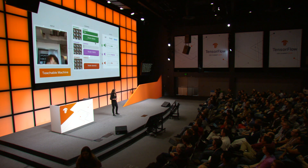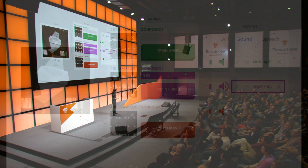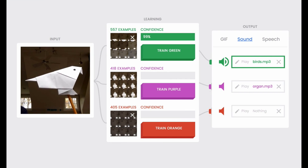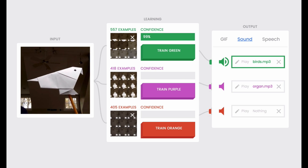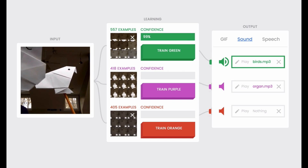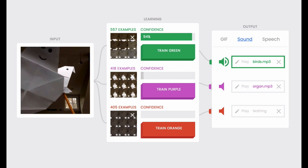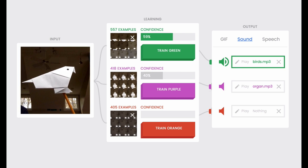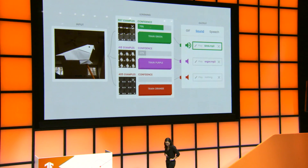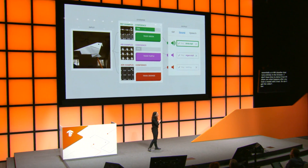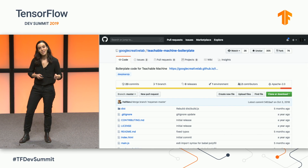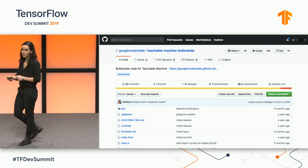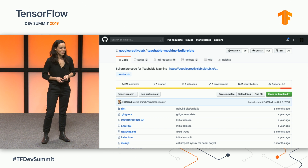I don't have time to demo it, but I'll show you what happens after you train a model with the tool. I see it choosing between two classes. Alex Chen, the creator, trained a class to recognize the bird origami and another class to recognize the spooky person origami.